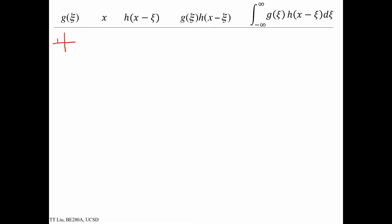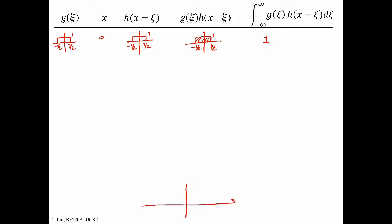The g of xi is always going to be this rect function, from minus one-half to one-half with amplitude one. At x equals zero, rect of x minus xi becomes rect of minus xi, which just looks like a rect function with amplitude one. When we multiply these two functions together, one times one is one, so rect times rect is just a rect. The integral of that multiplication is simply one. So at x equals zero, the value of the convolution is one.